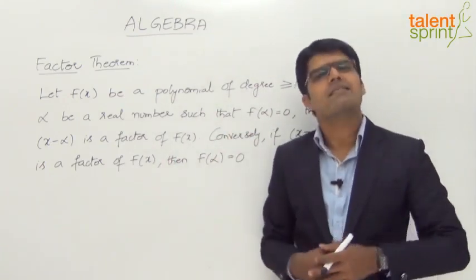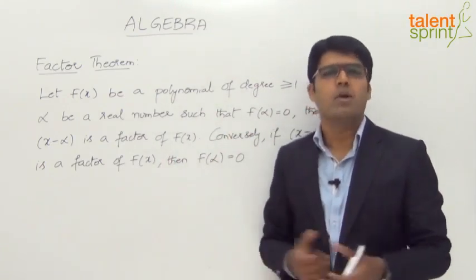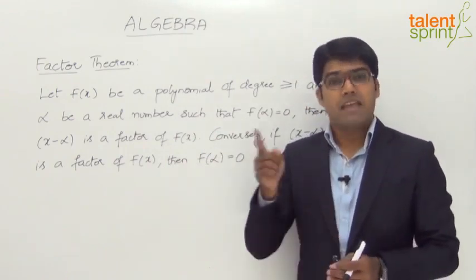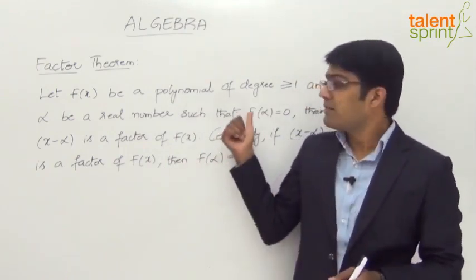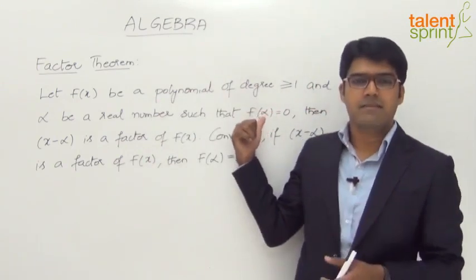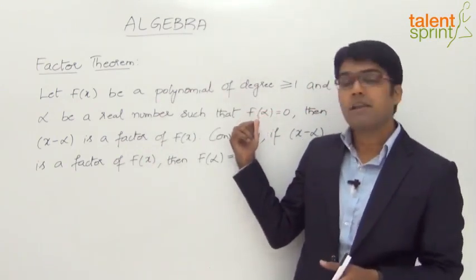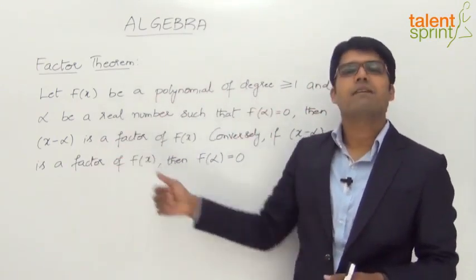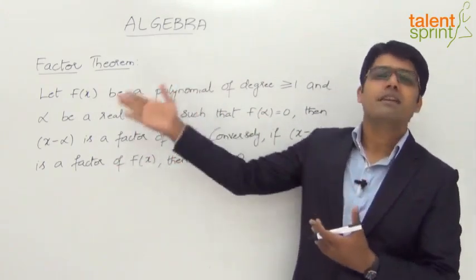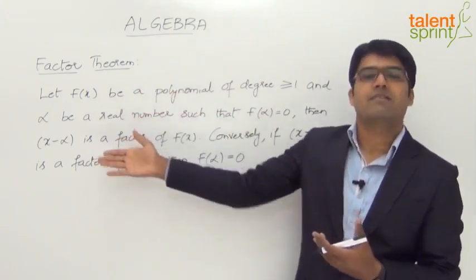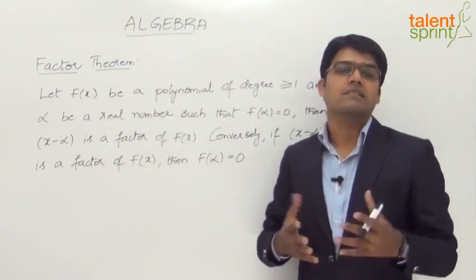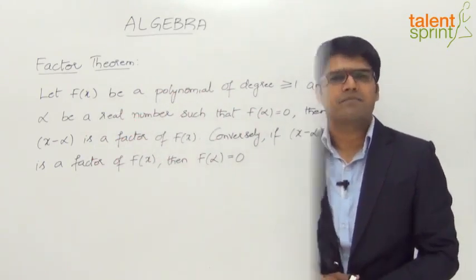The statement says: let f of x be a polynomial and let alpha be a real number. If f of alpha is 0, then x minus alpha will be a factor of f of x. So if the remainder is 0, it means it is a factor; or if it is a factor, then the remainder has to be 0. This is what is meant by the factor theorem.